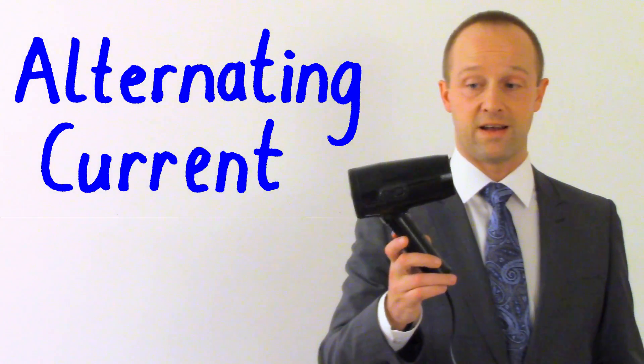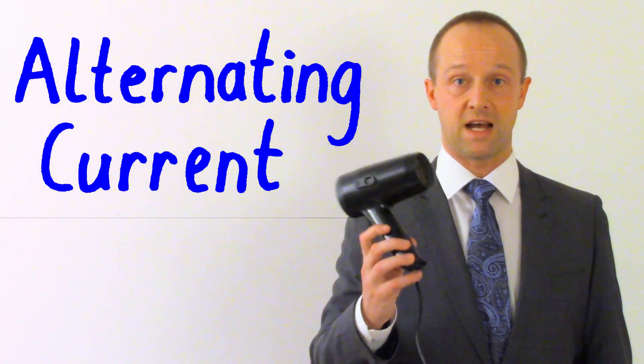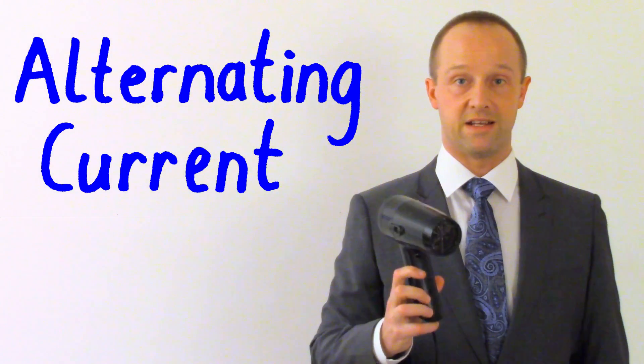So, for example, this hairdryer contains both a heating element and a motor, and it runs on an AC supply. If it's hard to picture what the electricity is doing in each case, allow me to give you an analogy. We'll start with DC.